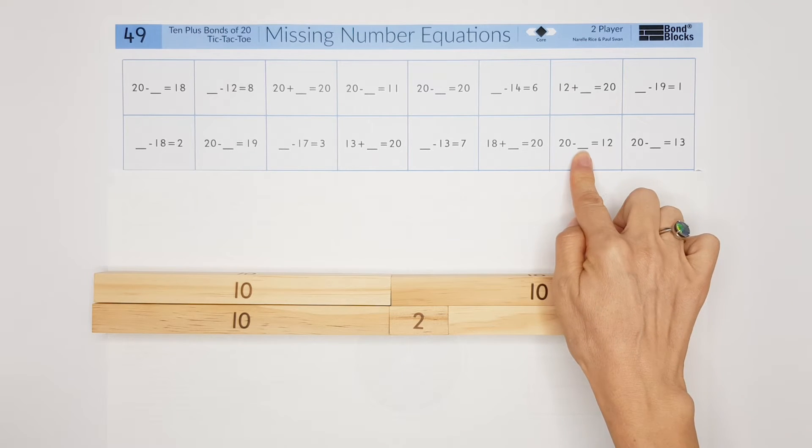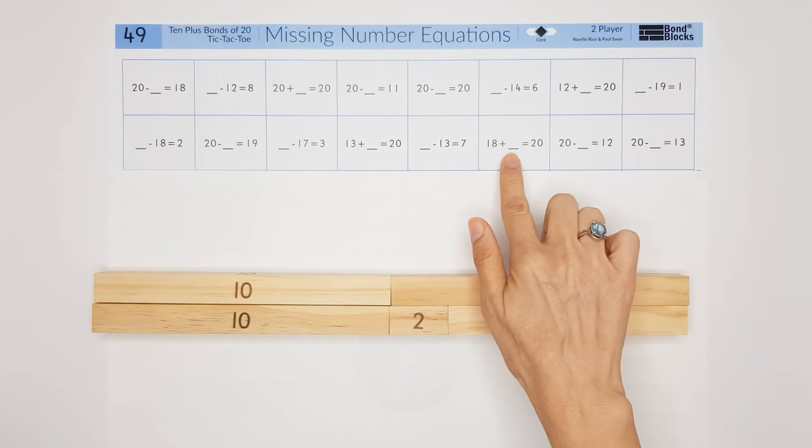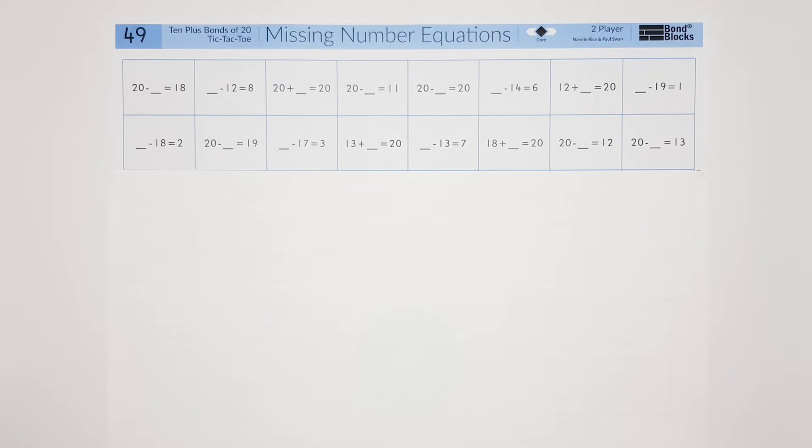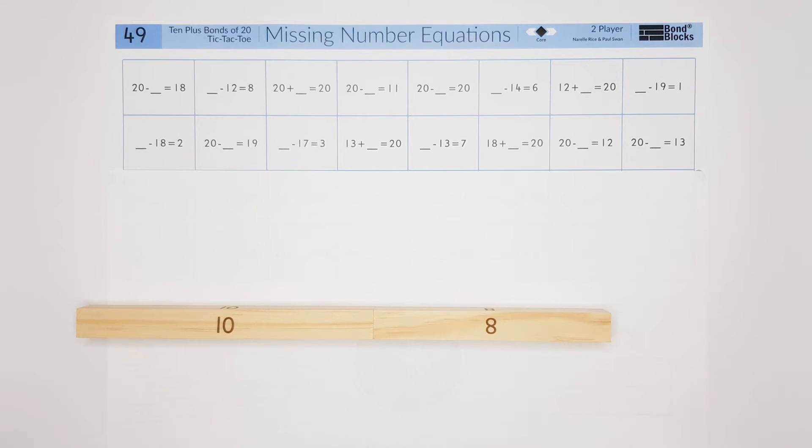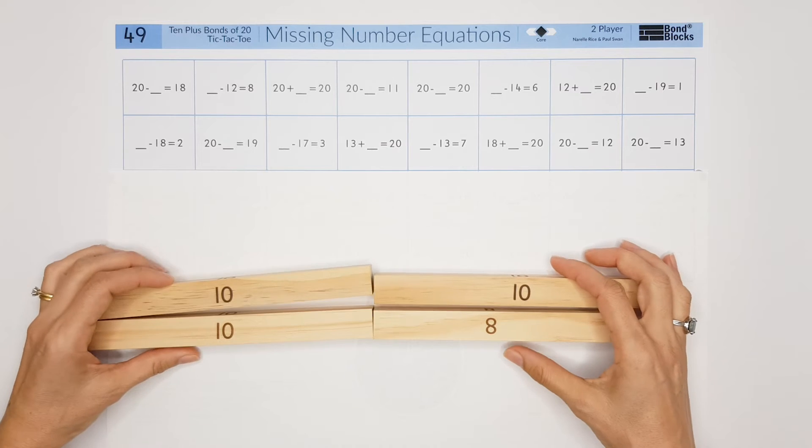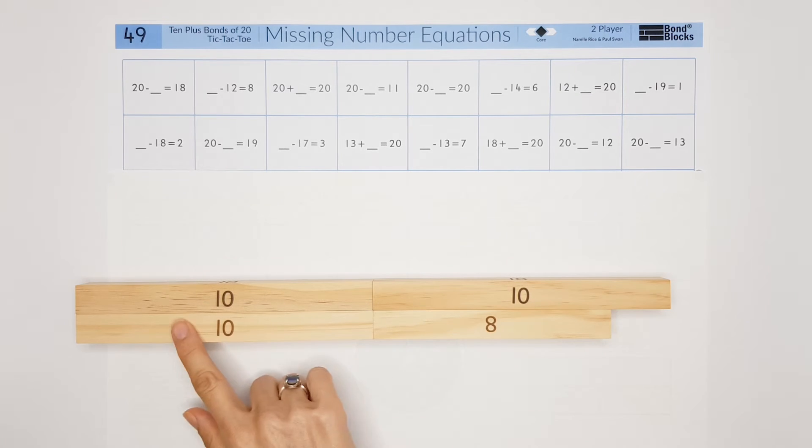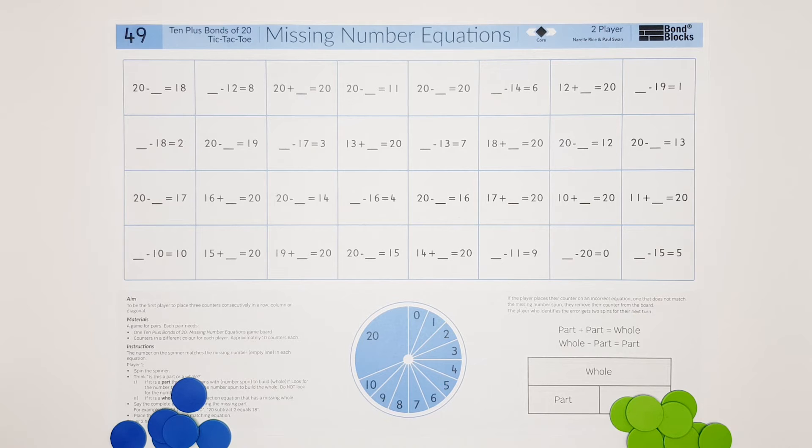So 8 would be the missing number. And finally for the addition, I know the part of 18 and I know the whole of 20, so what joins to the part of 18 or what do we add on to build the whole of 20? It's 2, so the 2 would go there.